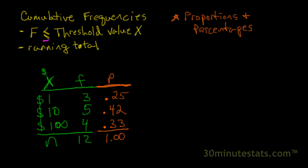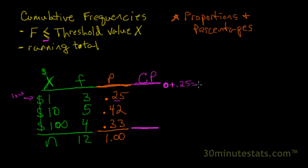Now we can go ahead and create our cumulative proportion column — a new column in our data set. We'll call it CP for cumulative proportion, and this is calculated in exactly the same way as the cumulative frequencies. We'll start with the lowest value of x, which is $1, and assume we have a proportion of 0 to start with. We add to that the first proportion, 0.25, and that equals 0.25. For the next category, we start with 0.25 and add 0.42 to get 0.67.